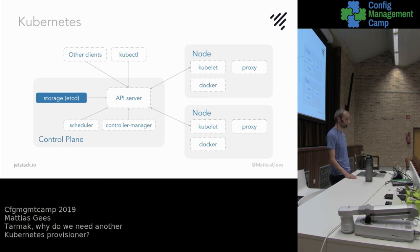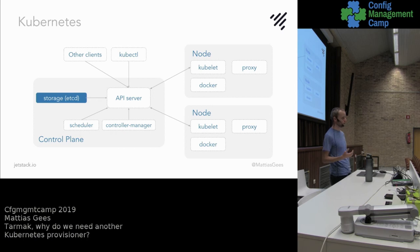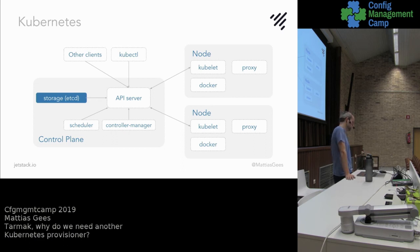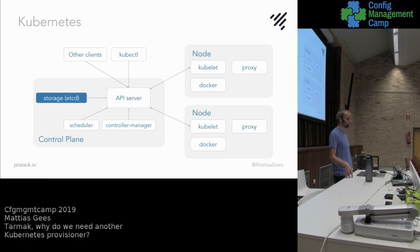Besides the API server, we have the controller manager. The controller manager consists of all different microservices that decide to take action on Kubernetes objects — examples are pod deployments, services, and many others. The third component of the control plane is the scheduler. The scheduler's only responsibility is to take actions and decide where a pod will be run inside your Kubernetes cluster. It will detect in the spec file if a node is being assigned to a pod, and if it's not, it will use its algorithm to decide where to best place a pod.